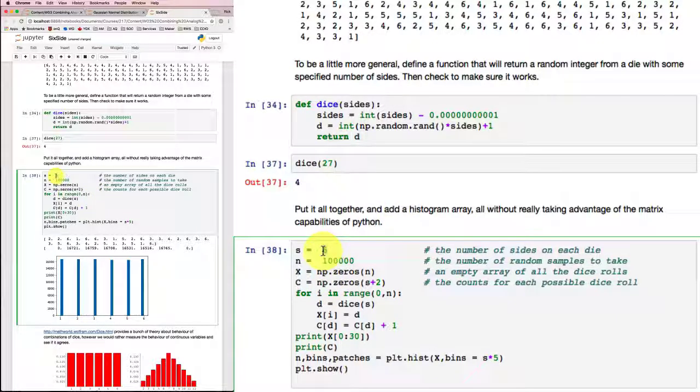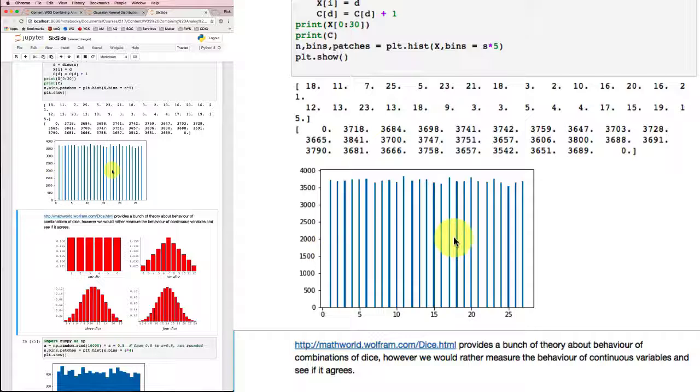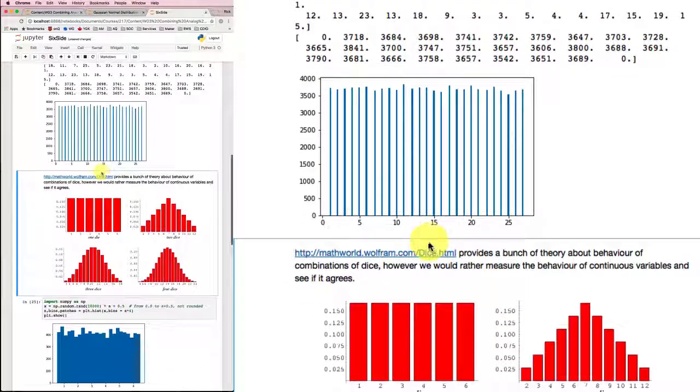So if I tried that with 27 instead of 6, let's see what happens. I got a whole lot of discrete values again spread out in the histogram. So it's doing what I expected it to do. It's generating relatively uniform distributions.